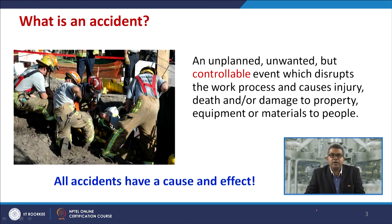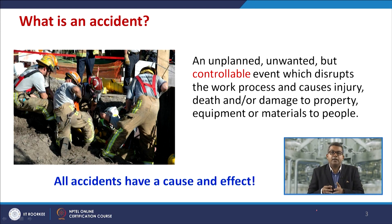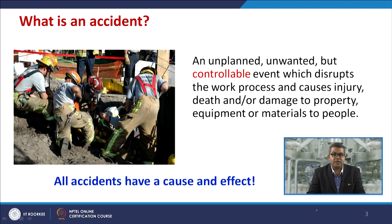Let us look at what an accident is. The standard definition is that an accident is an unplanned, unwanted but controllable event which disrupts the work process and causes injury, death, and/or damage to property, equipment, or materials. This may attribute to the entire economic loss of a particular plant, industry, or country. All accidents have a cause and effect — this is the rule of thumb and needs to be remembered throughout this chapter.